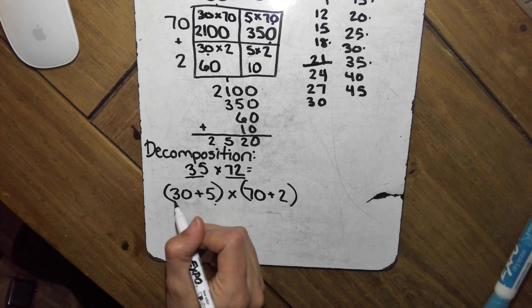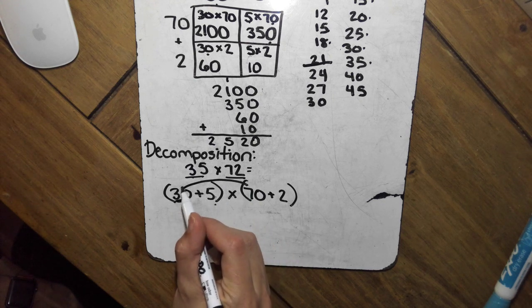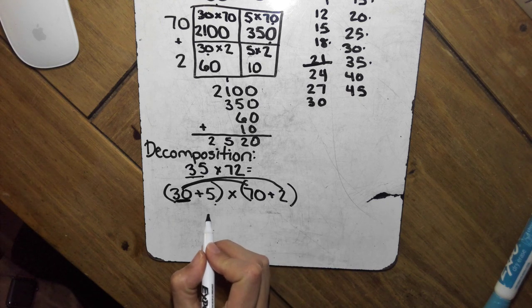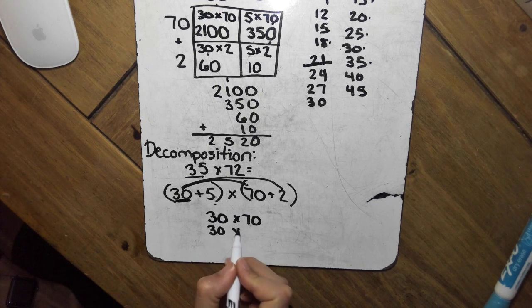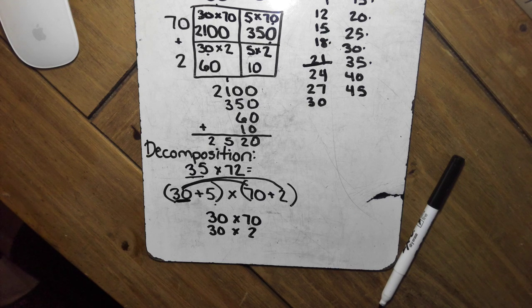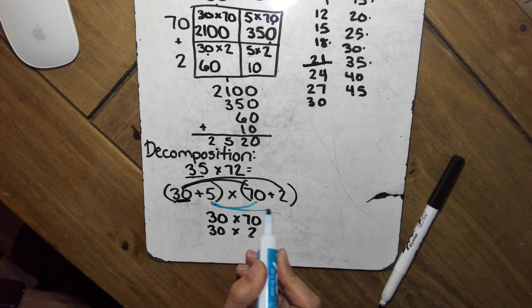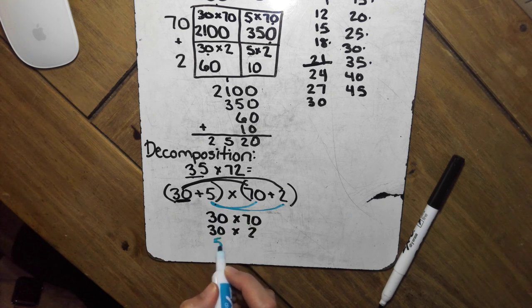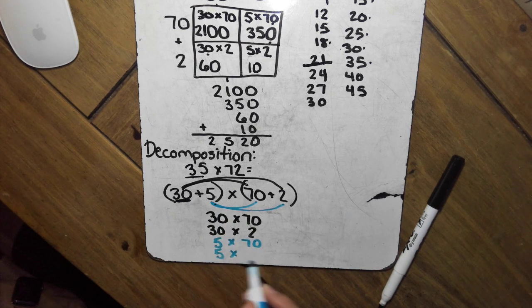All right, so I'm going to take my first factor, and I'm going to take the 30 first, and I'm going to multiply the 30 by each number in the other factor. So I'm going to do 30 times 70, and then 30 times 2. Then I'm going to take the next number in this factor, and multiply it by each number in the other factor. So we're going to do 5 times 70, and 5 times 2.